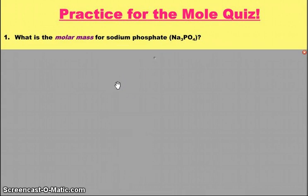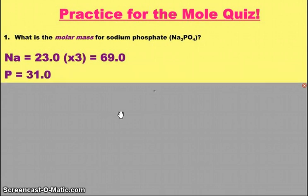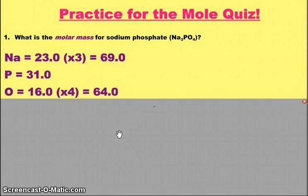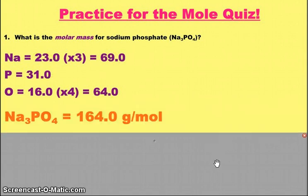So there's three sodiums. Each sodium is 23.0, so that makes a total of 69.0. Phosphorus, which is 31.0. And then four oxygens, each of them 16.0, which makes 64.0. Add those three numbers up, and you get the grand total of 164.0. Yes, it's important to label the .0. And that, of course, is grams per mole. Excellent.